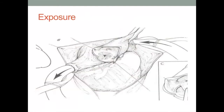Of paramount importance regardless of any proposed technique is exposure of the left ventricular outflow tract. In many instances a complete division of the ascending aorta approximately one centimeter above the sinotubular junction provides excellent exposure to the aortic valve and left ventricular outflow tract. Stay sutures may be placed into the wall of the aorta to help retract tissue and appropriately identify the coronary ostia, native valve architecture, commissures, and the sub-aortic region.